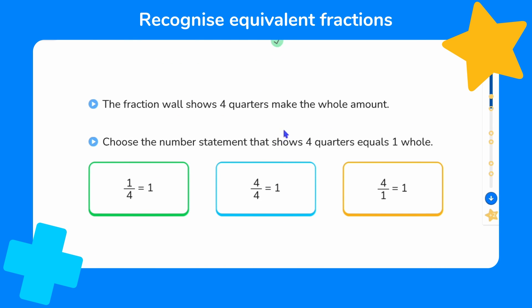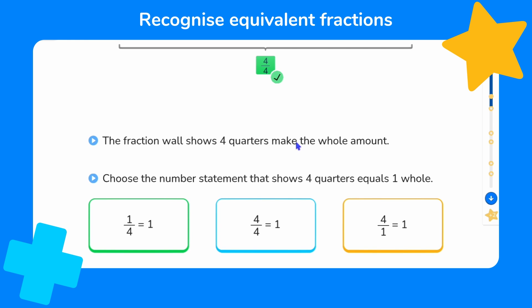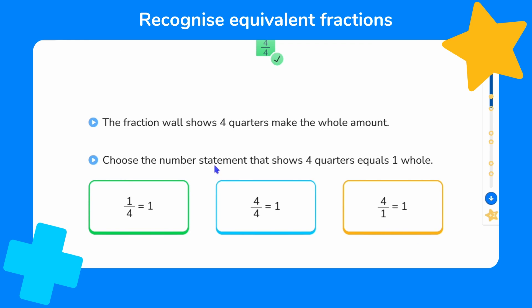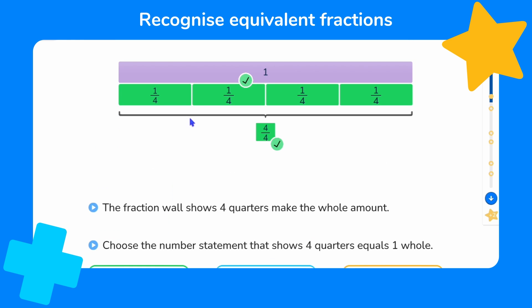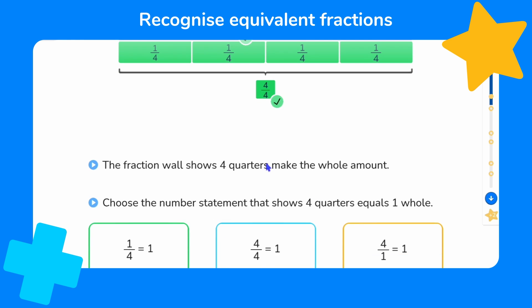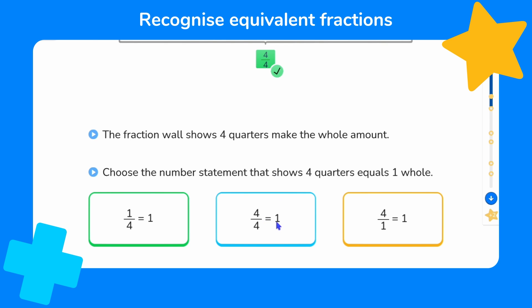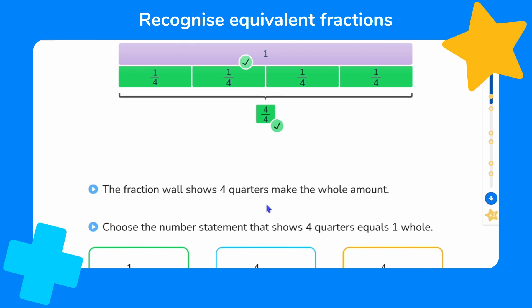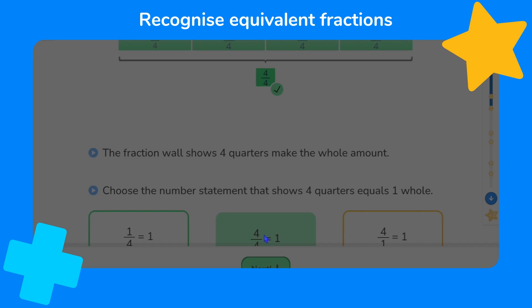So the fraction wall shows that four quarters make the whole amount. I'm asked to choose the number statement that shows four quarters equals one whole. Let's quickly check the fraction wall again. Well four quarters equals one. Four quarters is the same as one. So let's choose this option. Great, we earned another star.